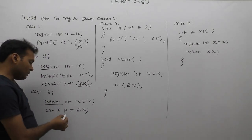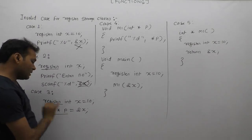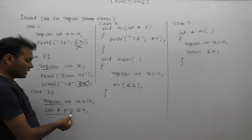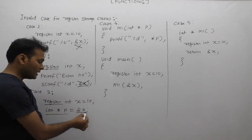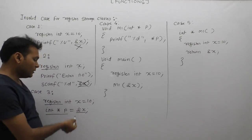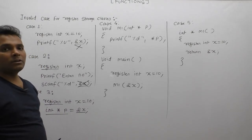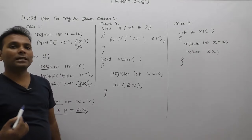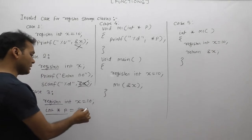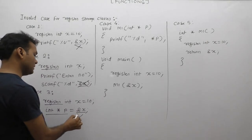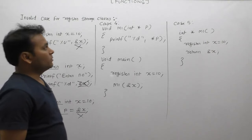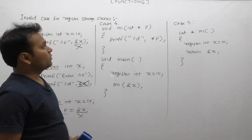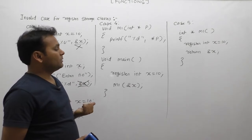In Case 3, X is a register variable and P is a pointer variable. A pointer stores an address, and since we cannot access the address of a register variable, we cannot create a pointer of register type. This is again an invalid case.